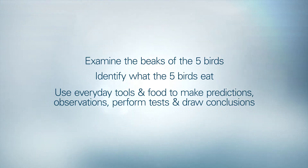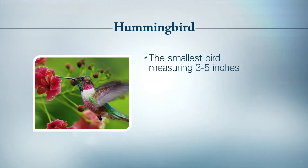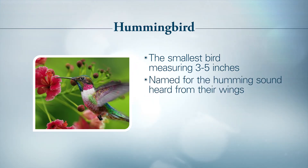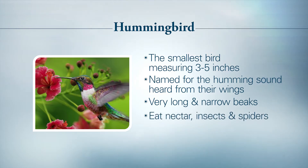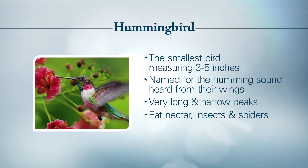The hummingbird is the smallest of birds, measuring from three to five inches. They got their name because of the humming sound made when they flap their wings rapidly. Their beaks are very long and narrow — longer in proportion to their bodies — which makes it easier for them to probe deep inside flowers searching for nectar. It's also important to note that hummingbirds get their protein from small insects and spiders.